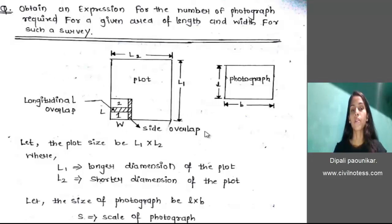Now, second one is the side overlap. Side overlap is the overlap between the adjacent flight lines, known as a side overlap or lateral overlap. As you can see here, there is a side overlap and this is a longitudinal overlap.